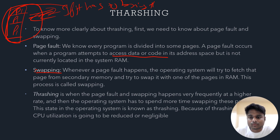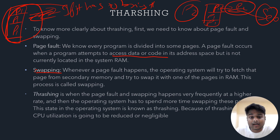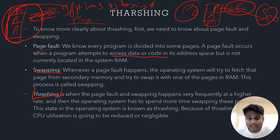Every page one was present in RAM, but if the CPU needs page two, it will bring that page from secondary memory and swap page one for page two — that is swapping. Thrashing is when page faults and swapping happen very frequently at a high rate. When both occur at a high rate, the operating system has to spend more time swapping pages, and CPU utilization becomes negligible.